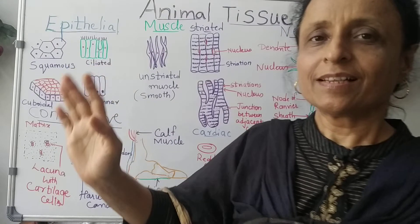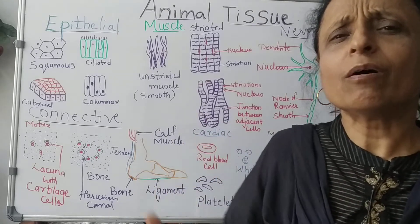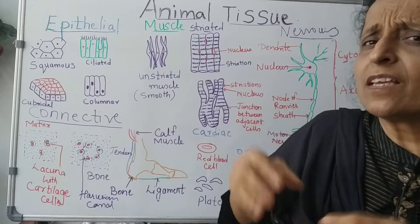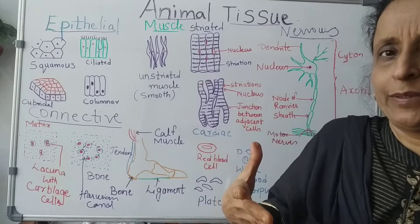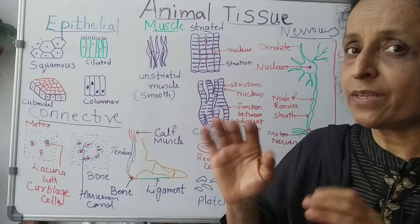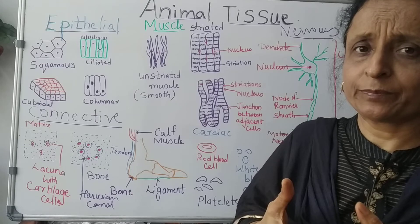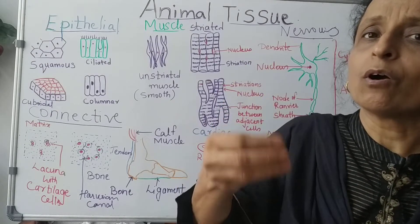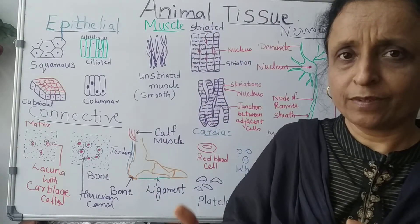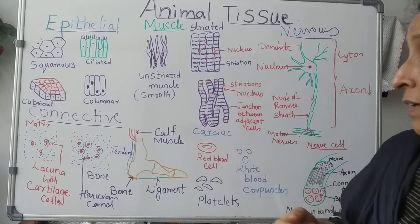Hello students, now let us study animal tissue. All organisms are formed from one cell; that same cell goes on multiplying. A group of cells having similar structure and specific function forms tissue. A group of tissues forms an organ, organs form organ systems, and organ systems form an organism. Let us see which animal tissues are present in us.